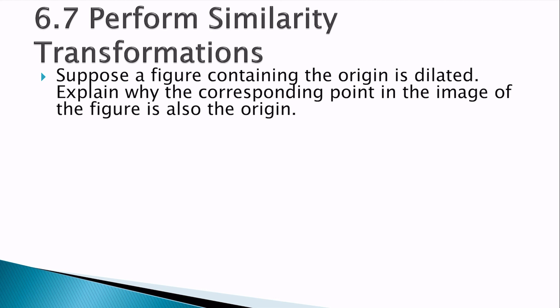Suppose the figure containing the origin is dilated. Explain why the corresponding point of the image of the figure is also the origin. Well, the coordinate rule is x, y goes to kx, ky. So the origin is 0, 0. And k times 0 is 0. So if I fill it in, k times 0, k times 0, I end up with 0, 0 still. Because 0 times anything is still 0.